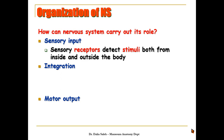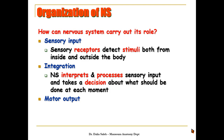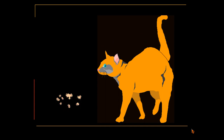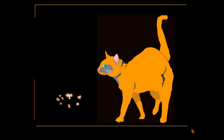The nervous system interprets and processes these sensory inputs and takes a decision about what should be done at each moment. Finally, it gives a response by activating muscles or glands. As we can see in the common example here: the rat first saw the cat, then integrated this information in his brain, understanding that this is a dangerous creature, so he gave a response by fleeing away from the cat.